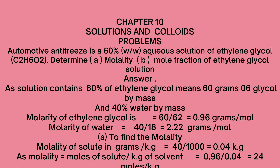The number of moles of ethylene glycol is calculated by mass divided by molar mass: 60 divided by 62, which equals 0.96 moles. The number of moles of water is 40 divided by 18, which equals 2.2 moles.